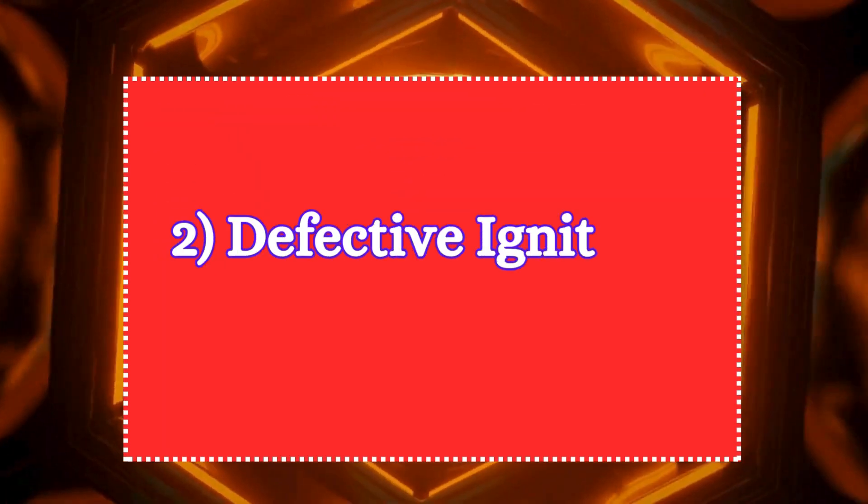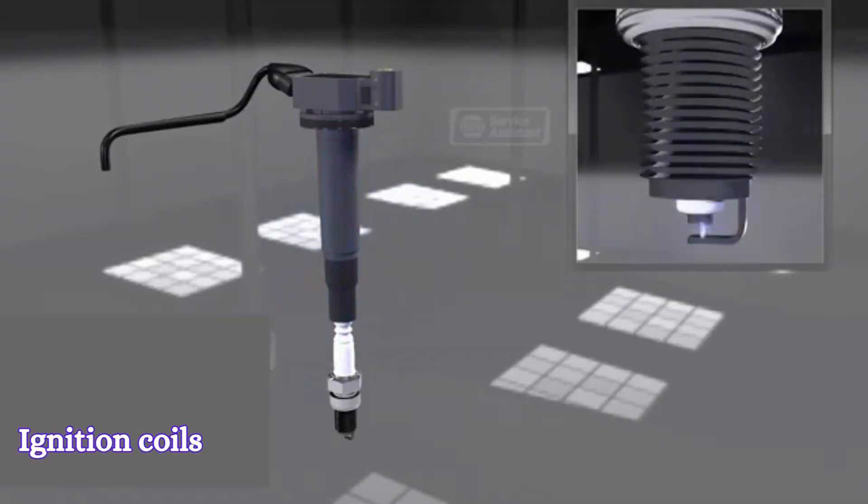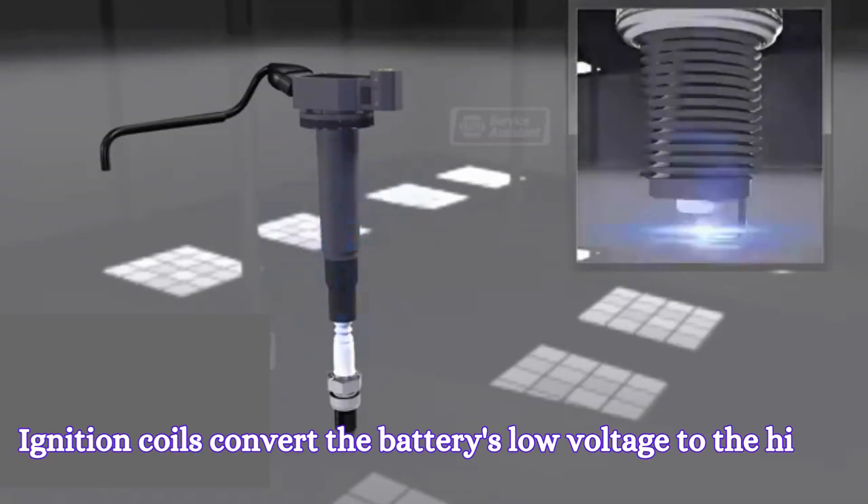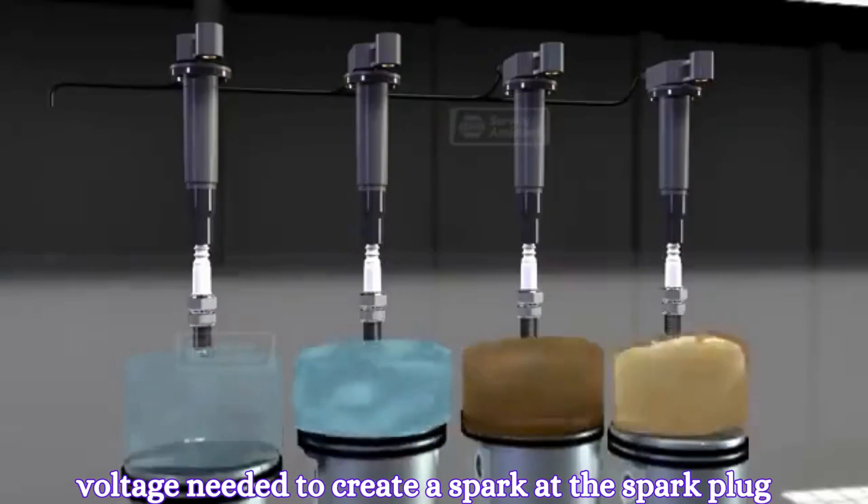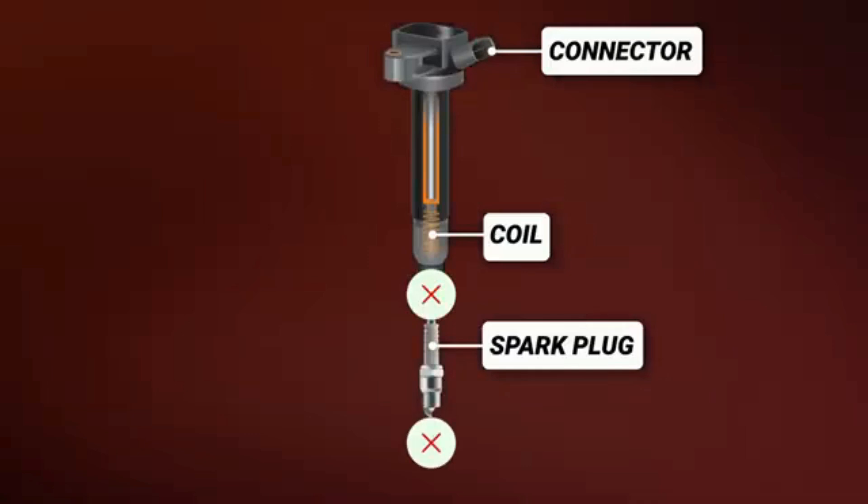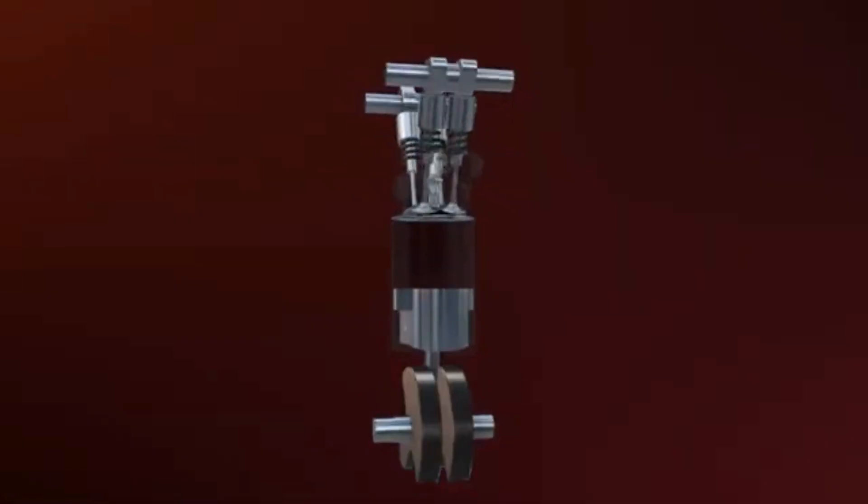Second, defective ignition coils. Ignition coils convert the battery's low voltage to the high voltage needed to create a spark at the spark plug. A defective coil can fail to deliver sufficient voltage, causing the spark plug to misfire.